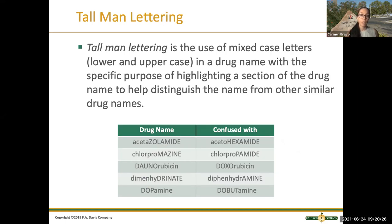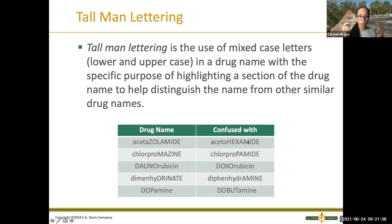The tall man lettering is something the ISMP came up with to give awareness to nurses about medications that kind of end the same, start the same, or sound alike when you say the name. What they did is write in capital letters the portion of the drug name that could be similar to another one. So if I see dopamine and dobutamine — they kind of sound alike — so you don't want to make a mistake between those two. Whenever you see the tall man lettering, that means they're trying to highlight that specific section of the medication name that might be confusing.